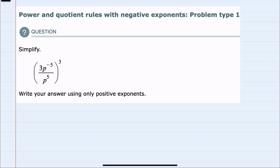In this video, I'll be helping you with the ALEKS problem type called Power and Quotient Rules with Negative Exponents, Problem Type 1. We're asked to simplify this expression using only positive exponents, and I can see that I have this parenthesis with the power on the outside. I know that this has the effect of multiplying all of the powers inside by 3, so I will start by looking at the 3 that's currently inside the parenthesis.